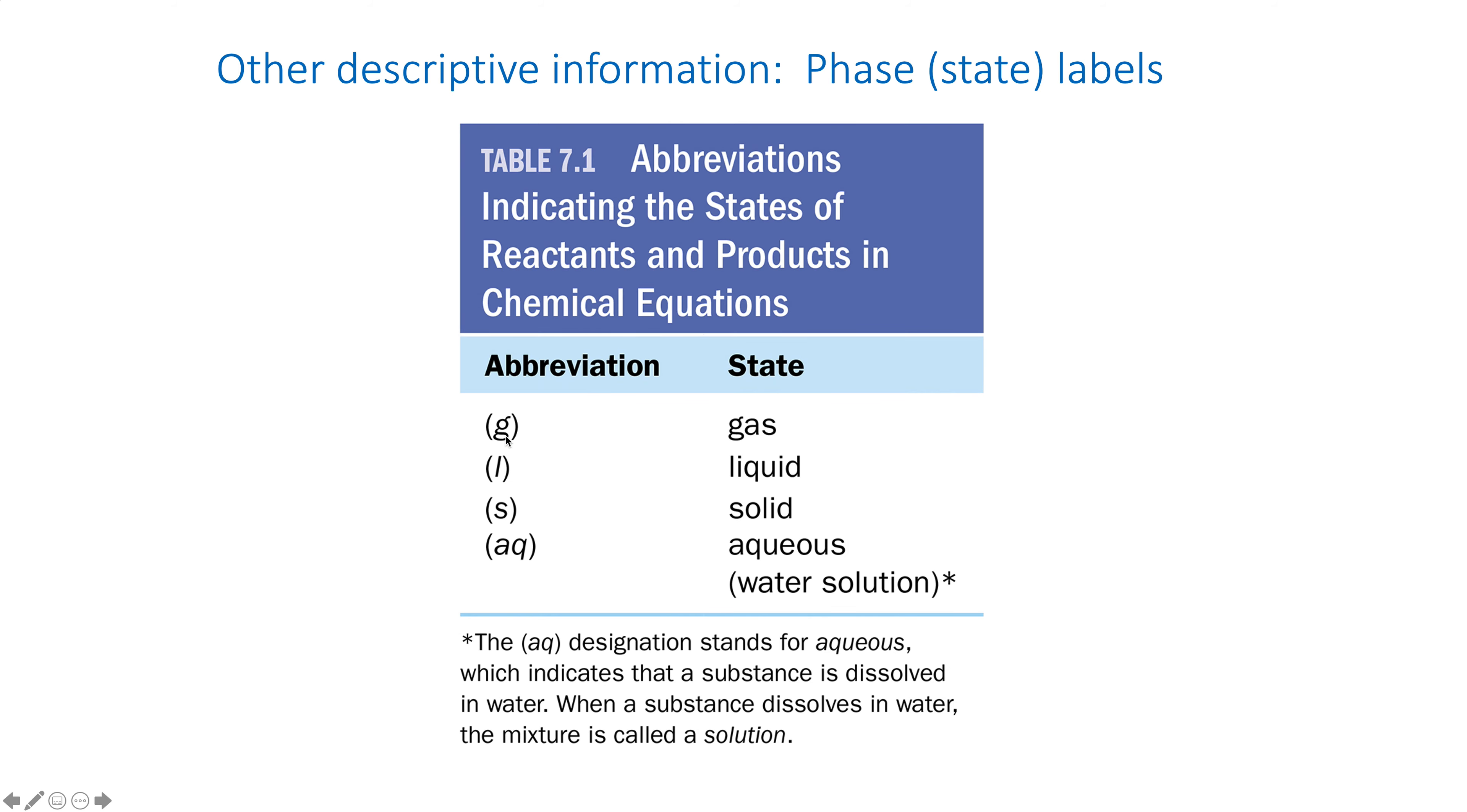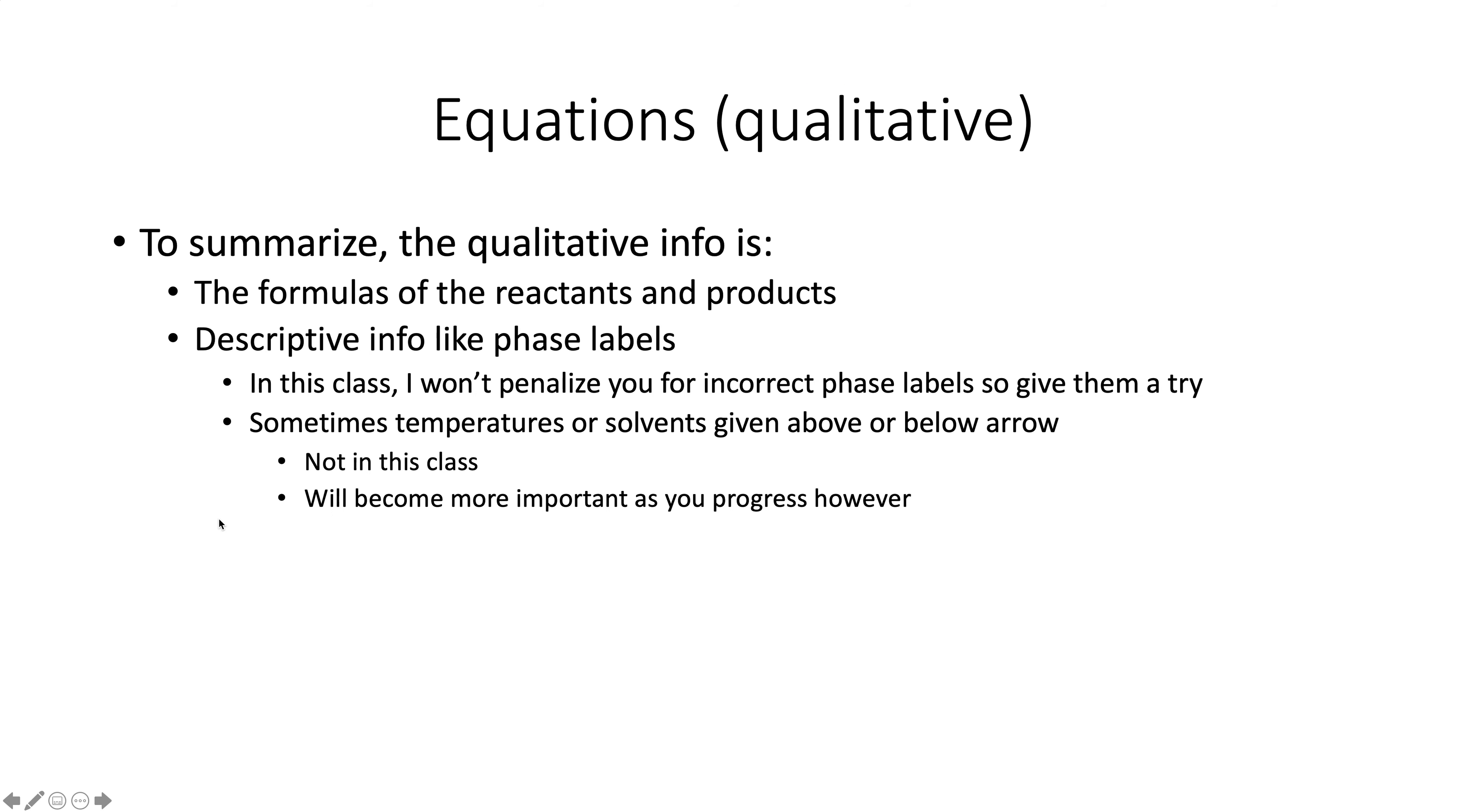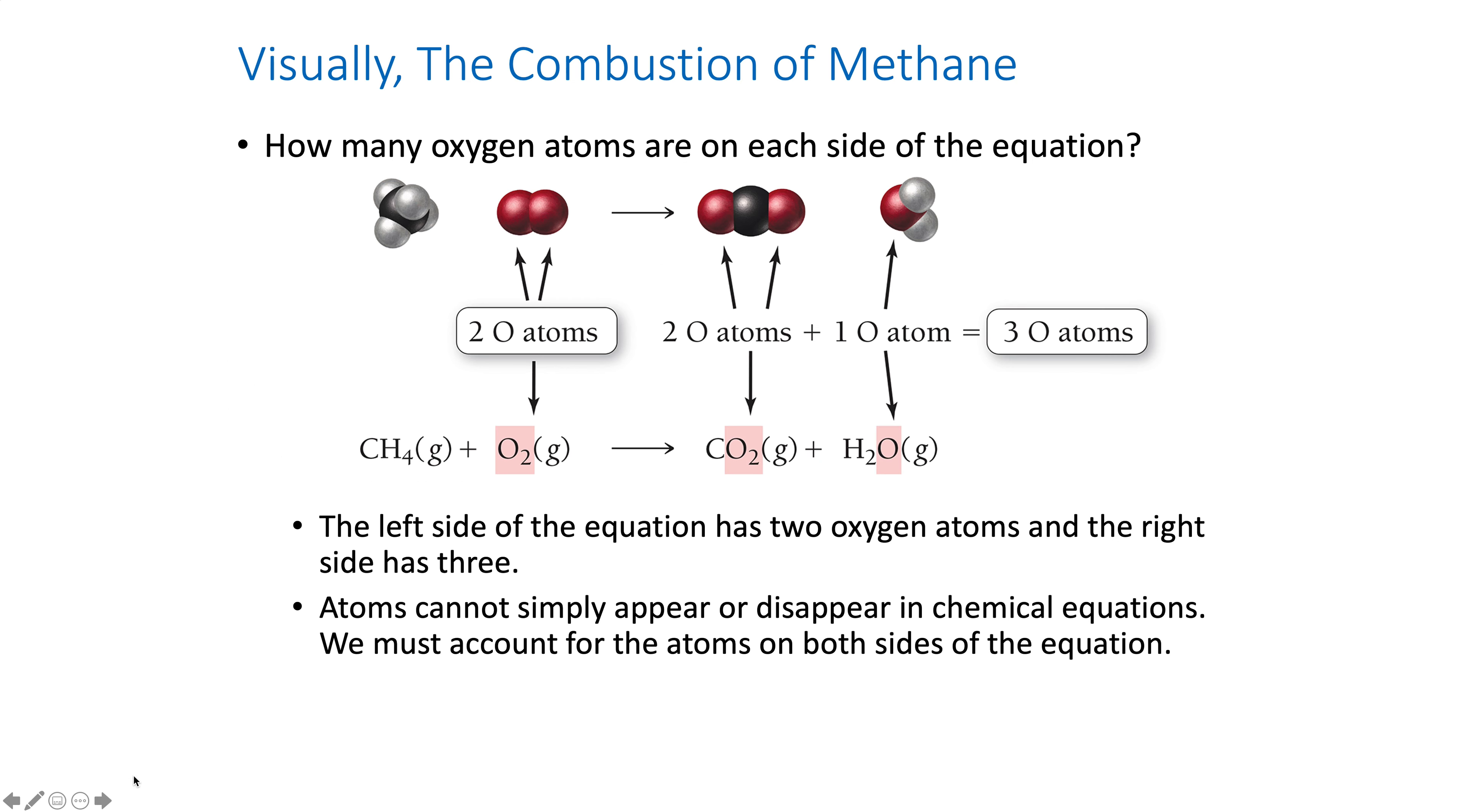These are phase labels: gas, liquid, solid. Aqueous means it's dissolved in water. To give you a difference, sodium chloride liquid would be melted salt. Sodium chloride aqueous would be salt water. Aqueous means in water, meaning it's a mixture. For my class, I don't care if you put phase labels on or not, and I won't penalize you if you do them wrong. They will become more important later, so it's a good idea to start the habit, especially now because it doesn't cost you anything. Sometimes other things like temperatures or solvents and reaction conditions can make a big difference, not in Chem 152.